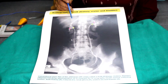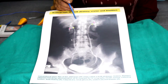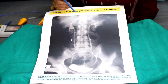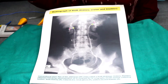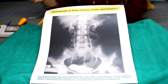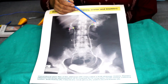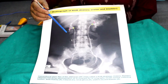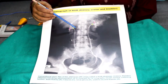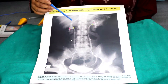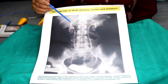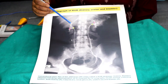Hi everyone. This is the intravenous pyelogram of the kidney, ureter, and the bladder. You see why this intravenous pyelogram is done — because the kidney, ureter, and bladder are soft tissue shadows. They cannot be visualized on a straight X-ray.